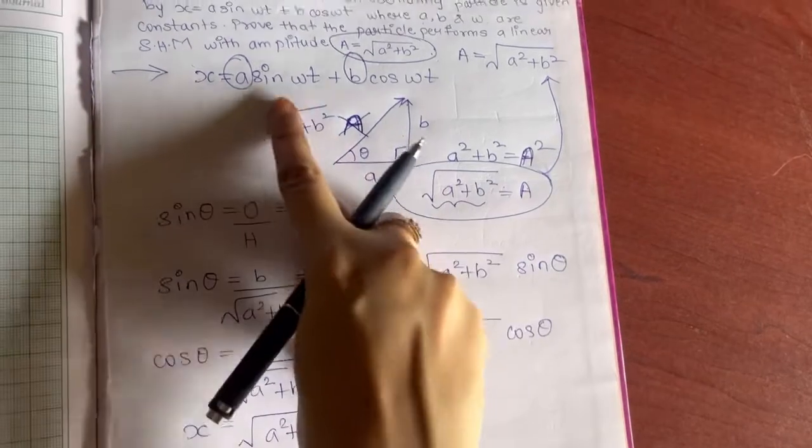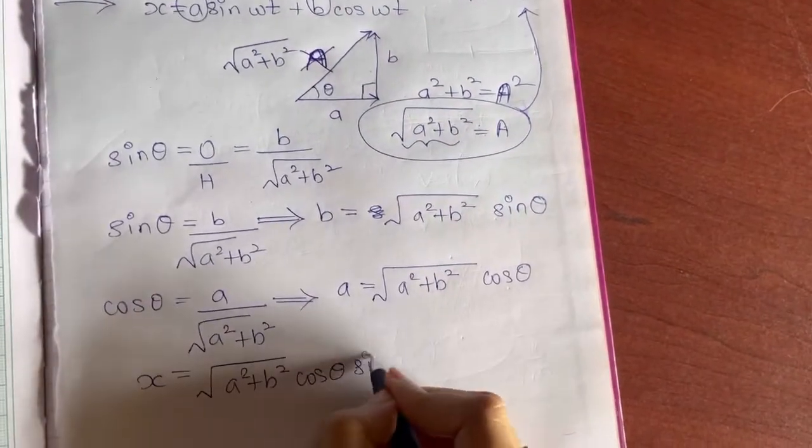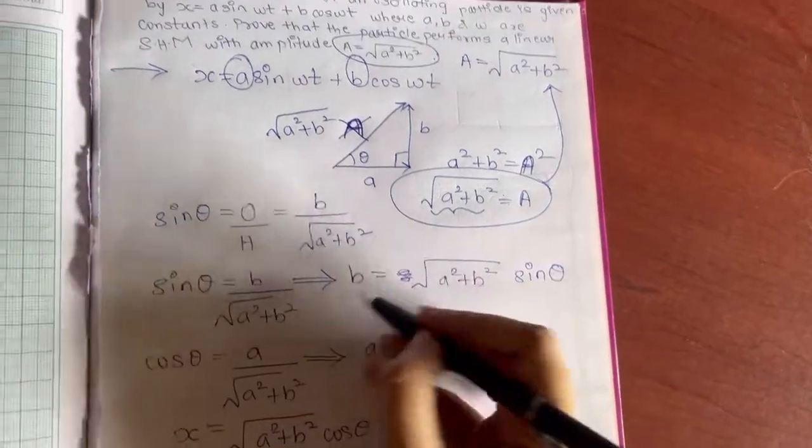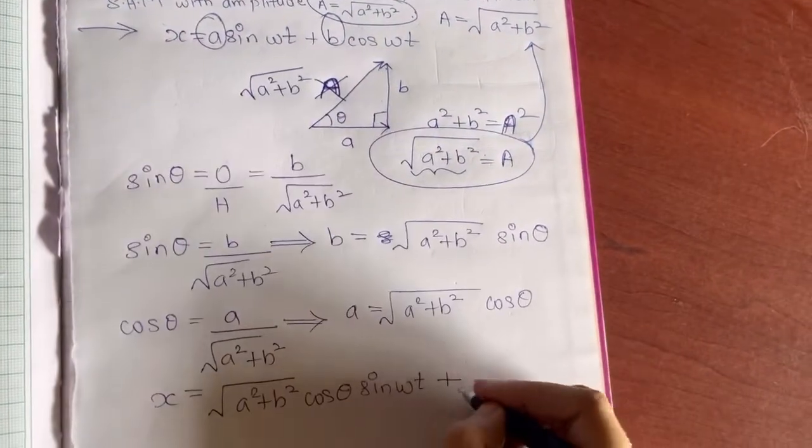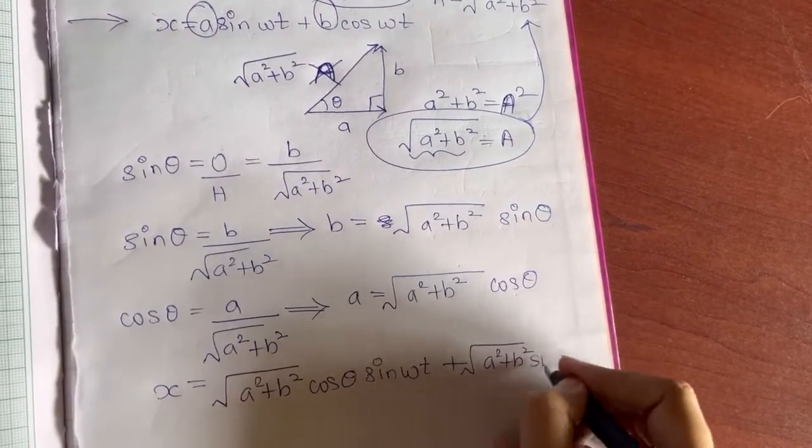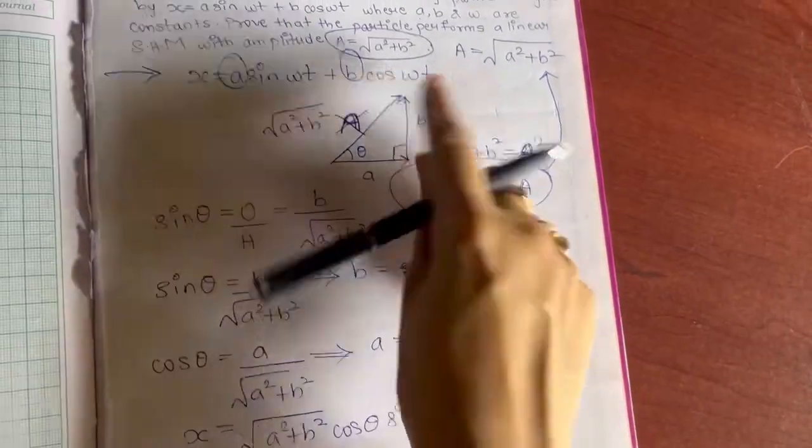And then you have sin ωt, plus value of b is √(a² + b²) sin θ, and then you have cos ωt.